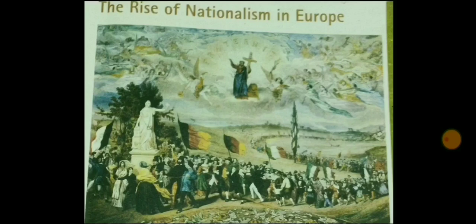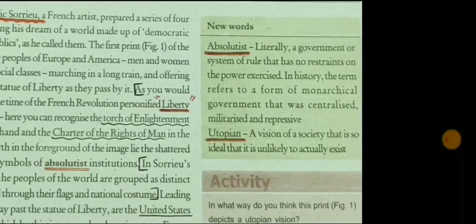Hello students, welcome back to my channel. Today we are going to start with the first chapter of history, which is the Rise of Nationalism in Europe. This chapter starts with a painting painted by Frederick Sauryu in the year 1848, and the name of the painting is 'The Dream of Worldwide Democratic and Social Republics.' This is a very important picture — questions are frequently asked in your boards, pre-boards, or any tests. Let us study this picture in detail one by one.